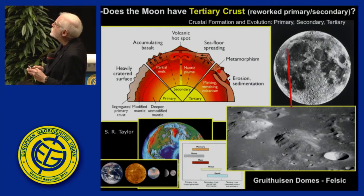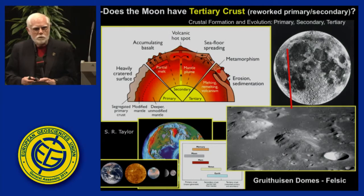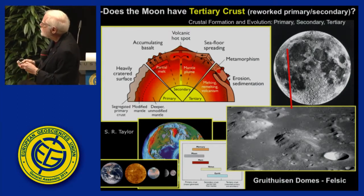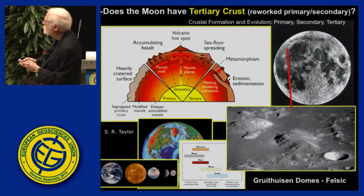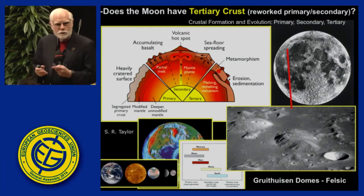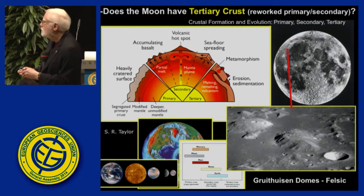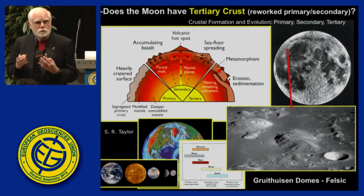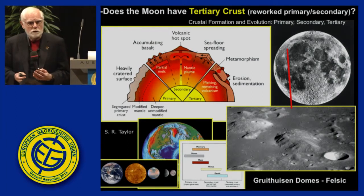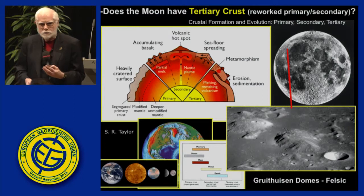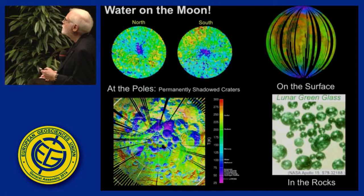Is there any tertiary crust on the Moon? New data suggests that some domes — 20 kilometers across, 1,200 meters high — are silicic in composition based on remote sensing data. So we have tertiary crust as well, some kind of reworked primary and secondary crust. Pretty amazing for the Moon.